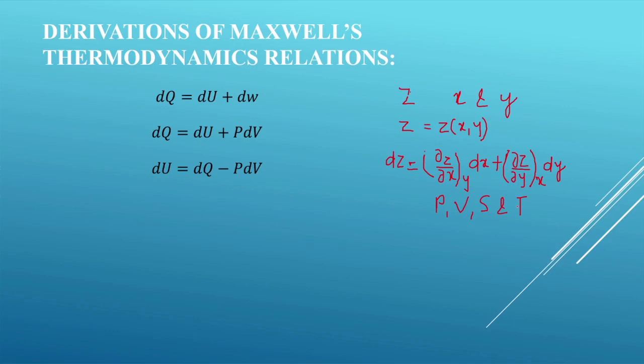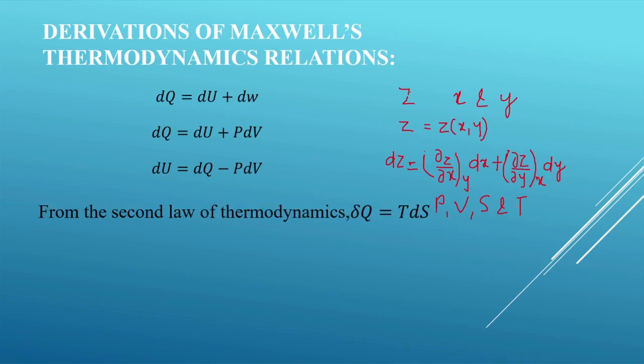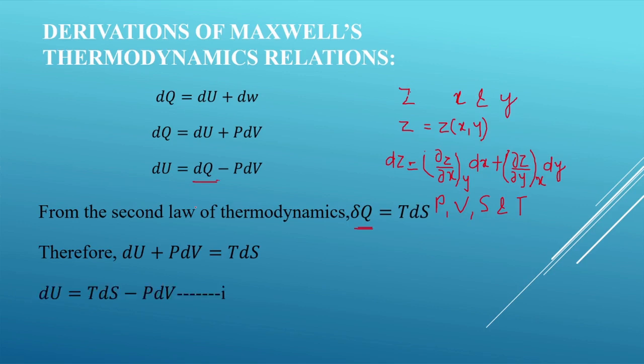From the second law of thermodynamics, the mathematical form is given as dq = T dS. Substituting this into the previous equation, we get du + p dv = T dS, or we can write du = T dS − p dv. Let us take this as equation number 1.